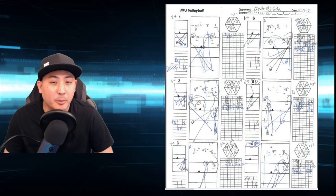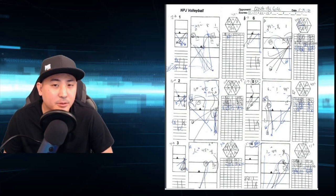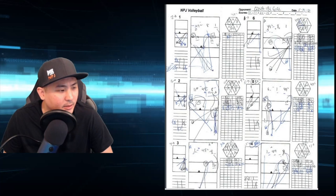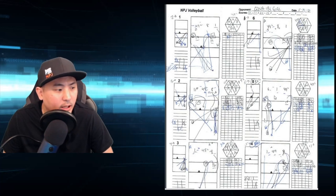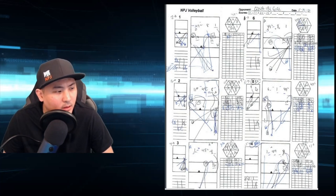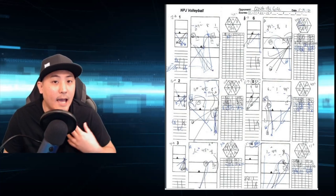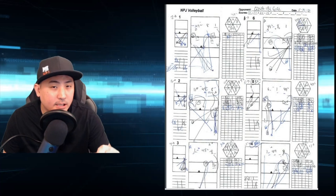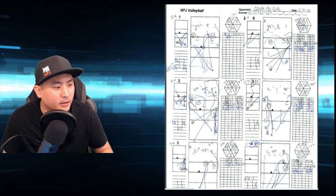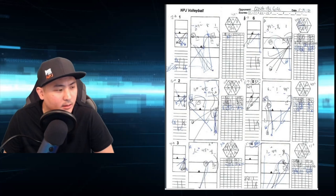If we look at this example on the shot chart, if our opponent is going to start serving in rotation five, the sheet tells us that we need to be serving in our rotation six when they're siding out in rotation five. They're going to start serving in rotation five, and we want to be in rotation six when we're serving against that rotation. So that tells us we need to receive in our rotation five in order to side out and then rotate to rotation six — and now we'll be serving in the matchup and rotation we want against their rotation five.